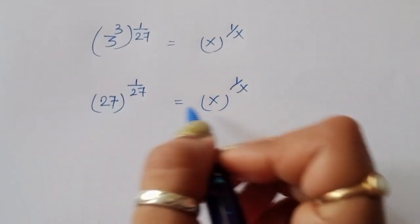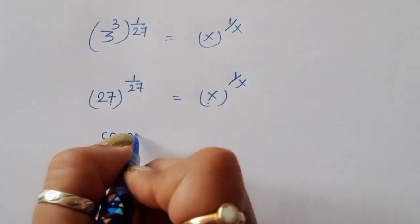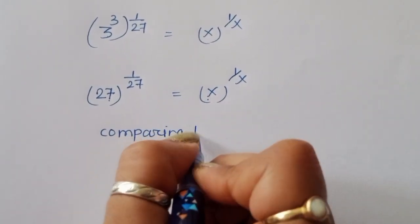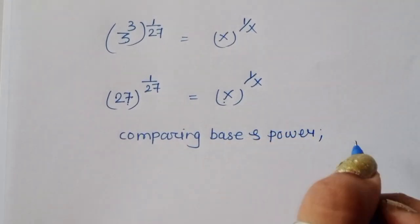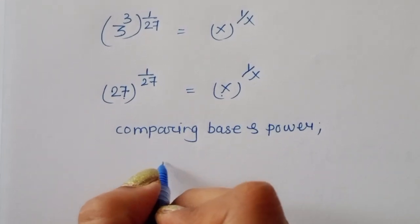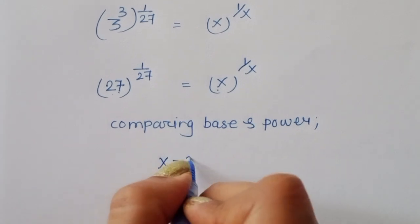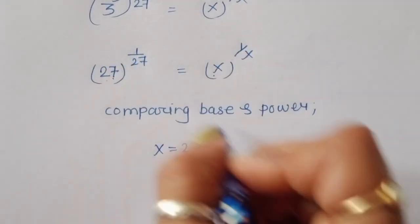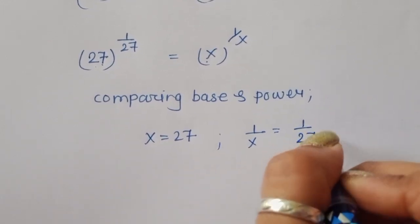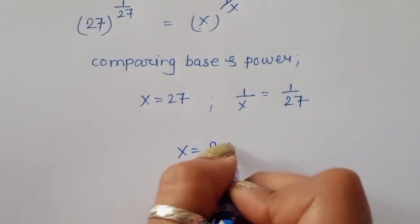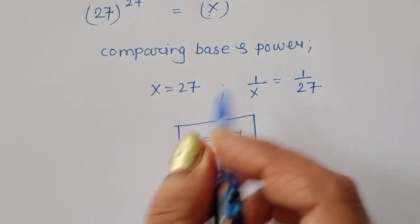Now you can check: the base is the same and the power is the same. Comparing base and power, we conclude x is equal to 27. From the base: x equals 27. From the power: 1 upon x equals 1 upon 27, so x equals 27. This is the value of x.